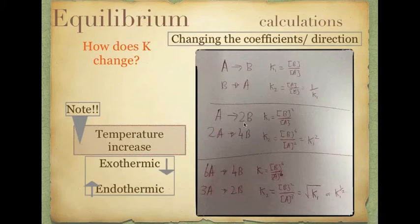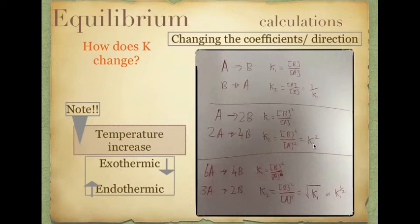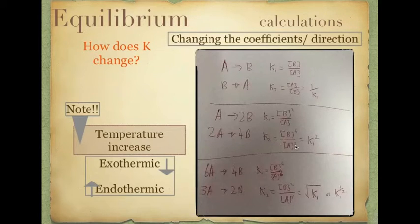If you change the coefficients — specifically if you double the coefficients — you end up squaring your K value. Mathematically, if K1 is B squared over A, because concentration is raised to the power of the coefficient, then doubling gives B to the power of 4 over A to the power of 2, which is in fact the square of the original K. So if you double your coefficients, you square your K value.